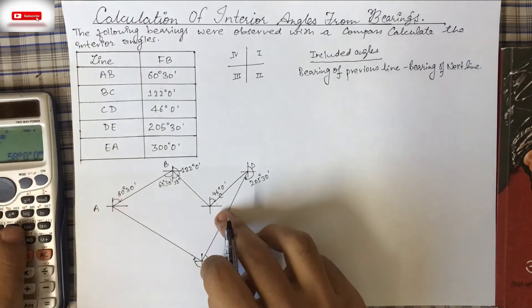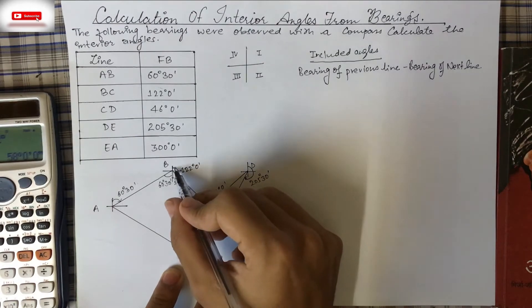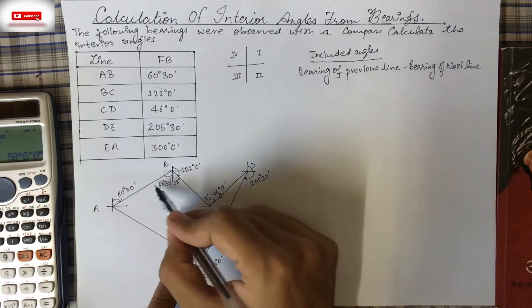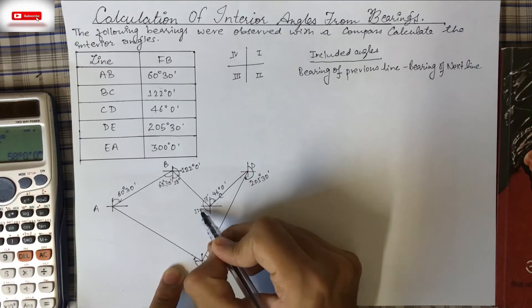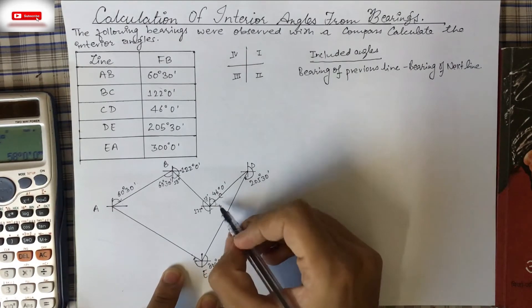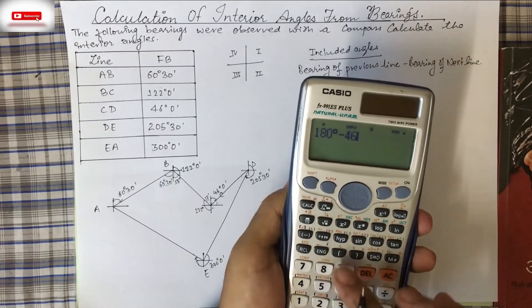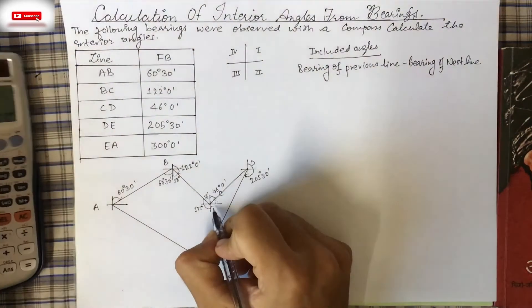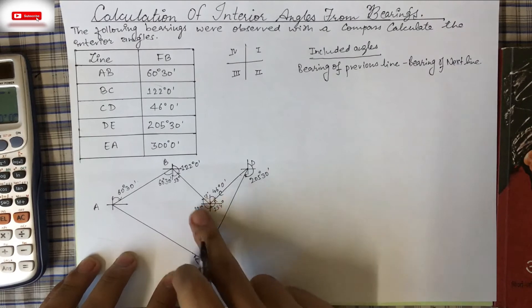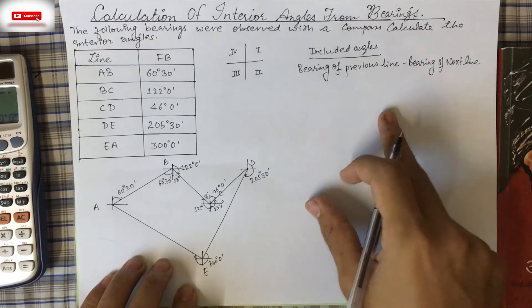For angle C: the bearing of BC is 122°0', and we can carry 58° from the previous step. The bearing of CD is 46°0', so 180° − 46° = 134°. This 134° is the component at C. In exams, this graphical approach can get you at least 3.5 out of 6 marks even without the full formula method.